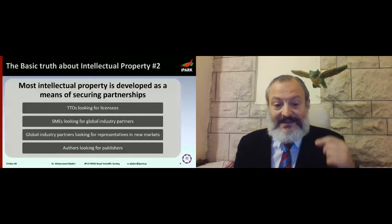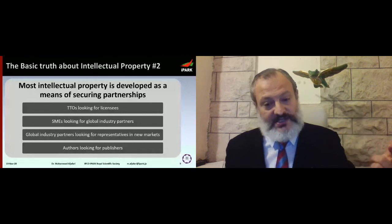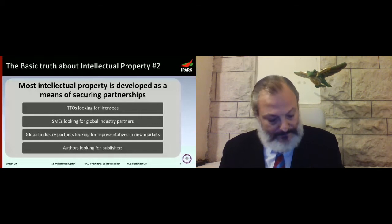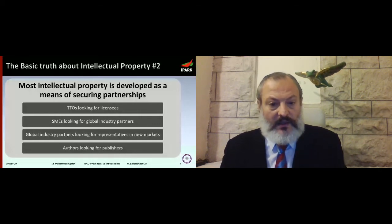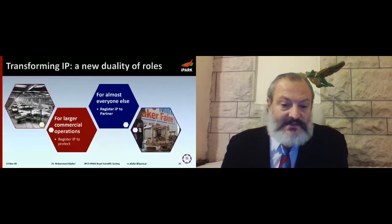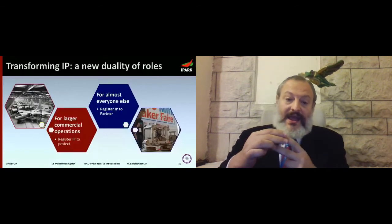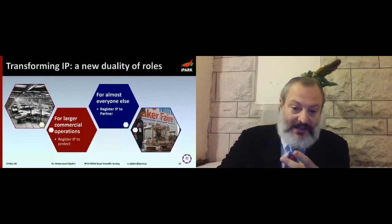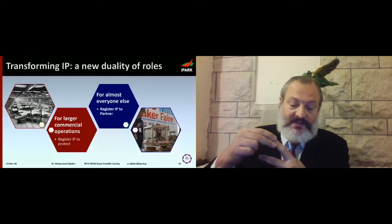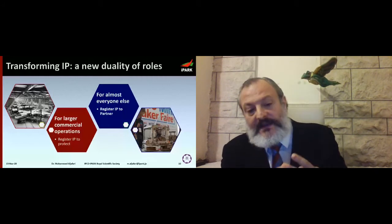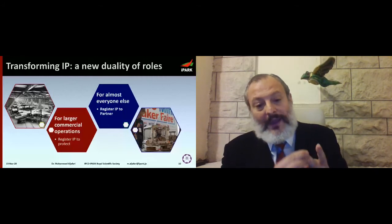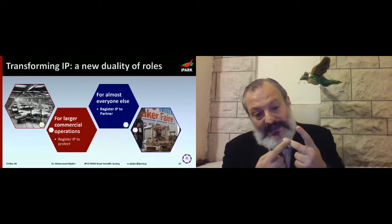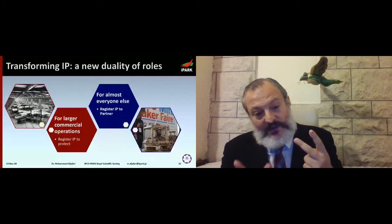So why did the university get a patent? In order to partner — they're transferring their know-how to industry through intellectual property. Intellectual property is the currency of knowledge. For industry — large commercial operations — intellectual property protects market position. For everybody else, intellectual property is a way to partner. This partnership-enabling role is very important and very often forgotten.